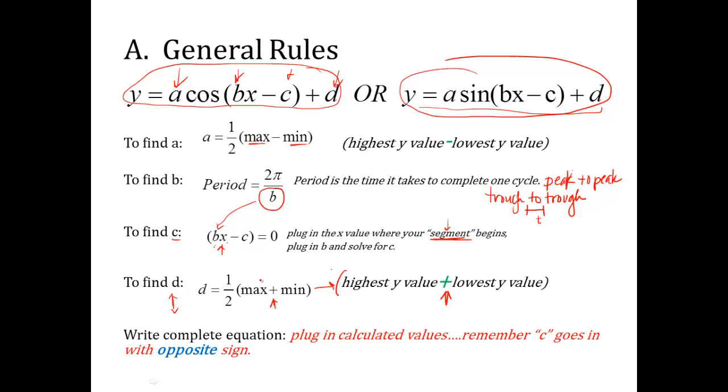So one thing I want to point out, once you've found a, b, c, d, you plug them into the equation. But remember, in the equation, c is always a negative. So whatever value you get for c when you run this step, when you put it in the equation, you have to change it, switch it to the opposite sign. So let's try an example.